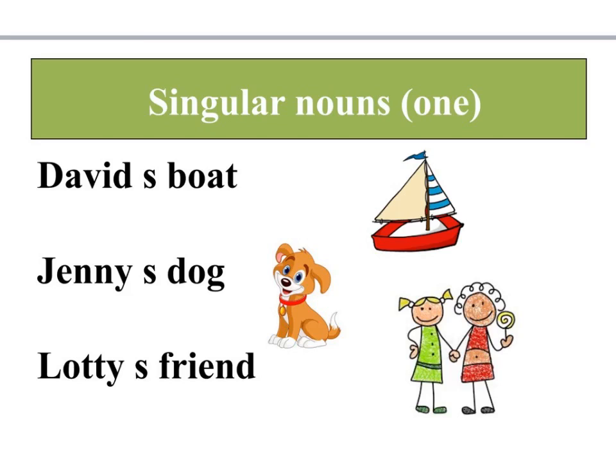Looking at these pictures, we have David's boat, Jenny's dog, and Lottie's friend. We have to think carefully about who owns the boat, the dog, or the friend, and we put the apostrophe before the 's' to show that it belongs to that person.